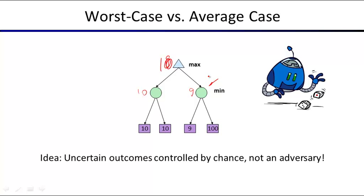This is a chance node, and by chance you'll go left or right, same here. If every split is 50-50, going left is the right thing, because you have a good chance of getting 100, and maybe 9, which is only slightly worse than 10.